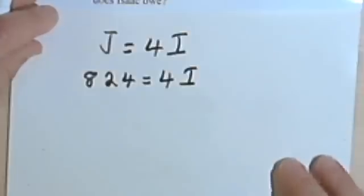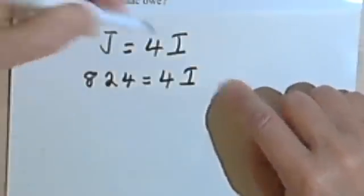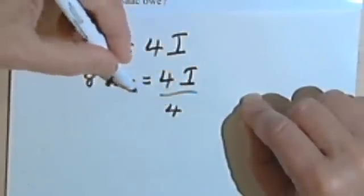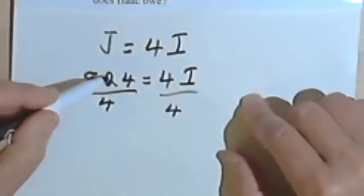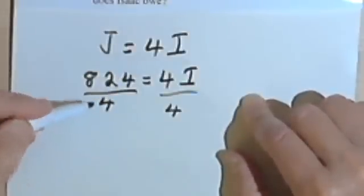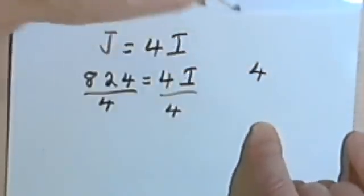Now I want to find out how much Isaac owes, so I'll just divide both sides of the equation by 4. Let's see. 824 divided by 4. Actually, let's do the long division thing, just to remember how they do it.